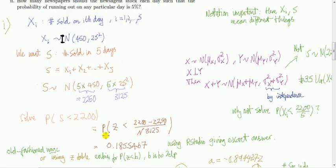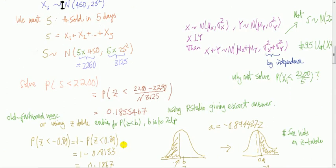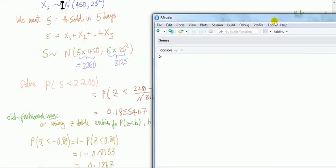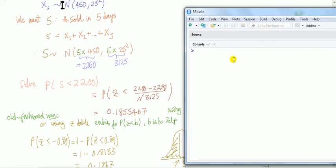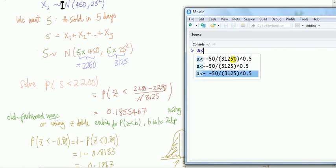And now we're back to the routine problem. So statement of the problem, probability that number sold in five days is less than 2200. I standardize and I look it up and I do it by computer. And that's the exact value. Let me show you how I did it by computer. Use this thing called R studio, which is free to download.